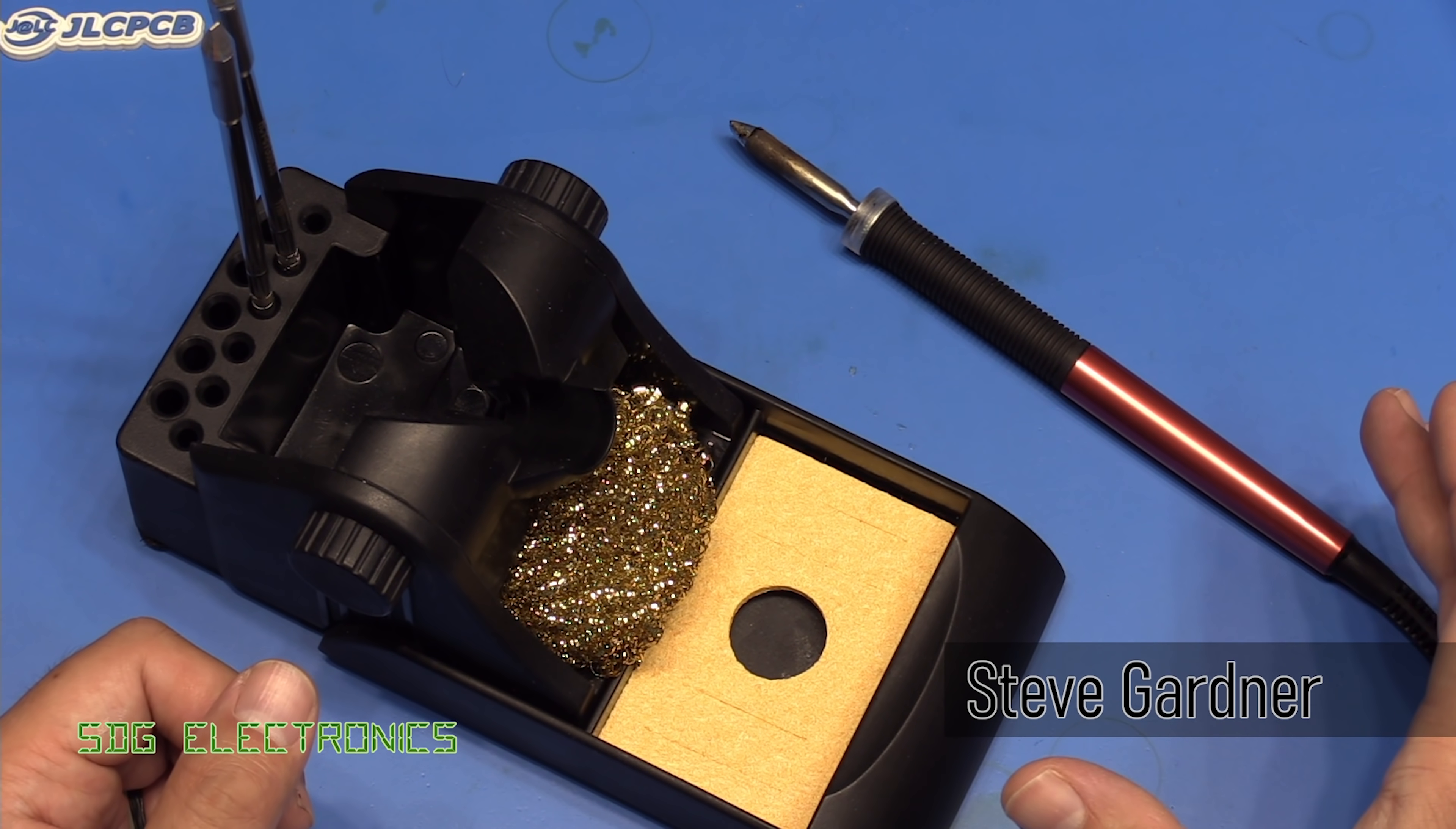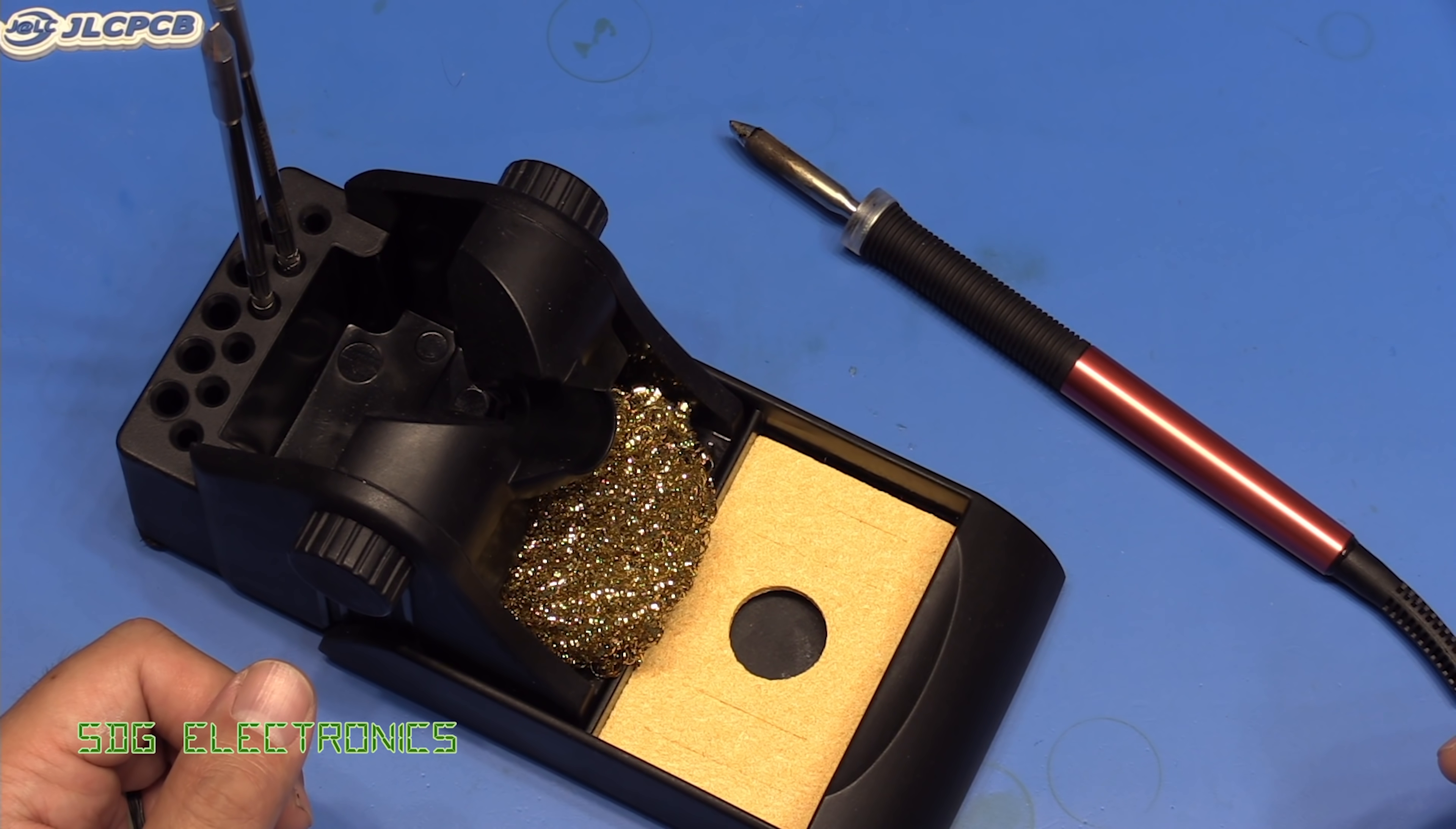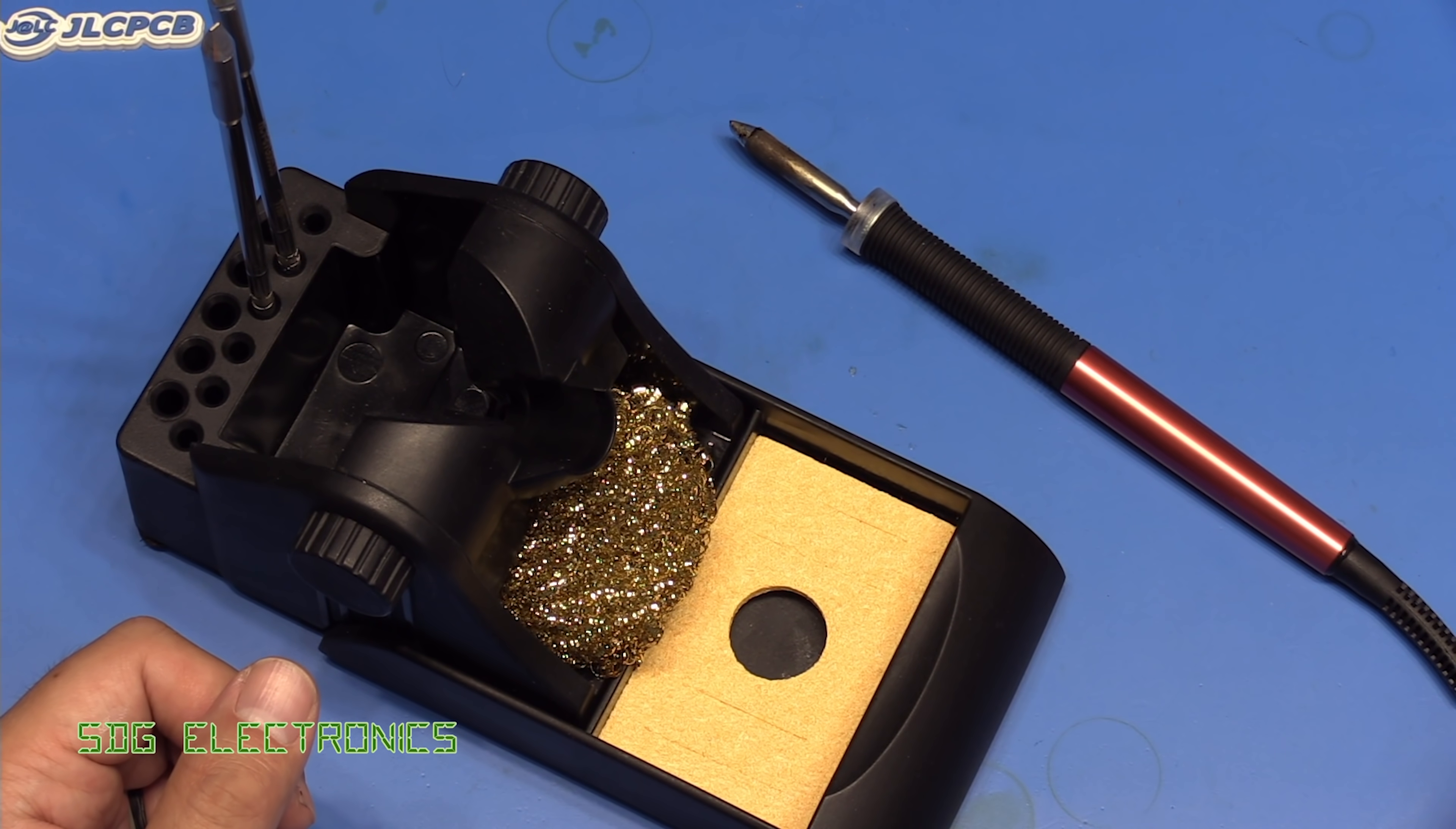These have been designed for high thermal demand applications, for example when you're soldering onto aluminium PCBs or when you've got extremely large components or you might be soldering onto wires, that kind of thing where you need to be able to dump more heat into the joint quicker.